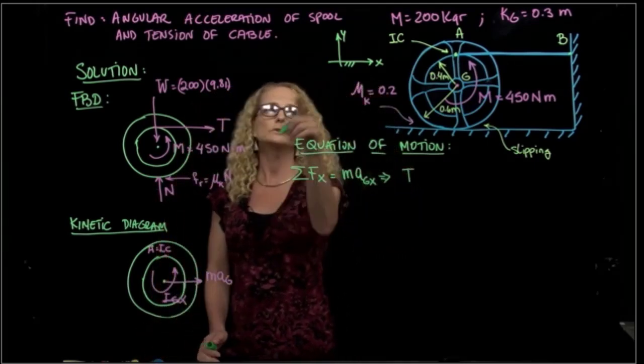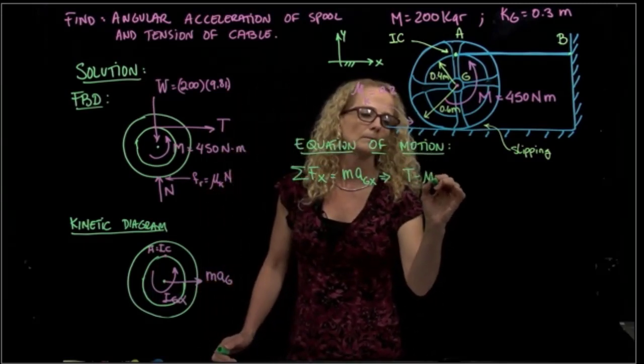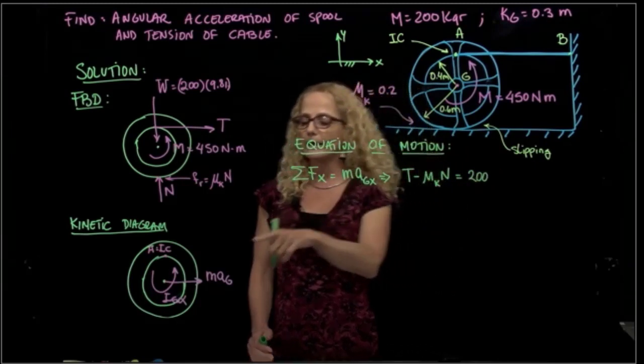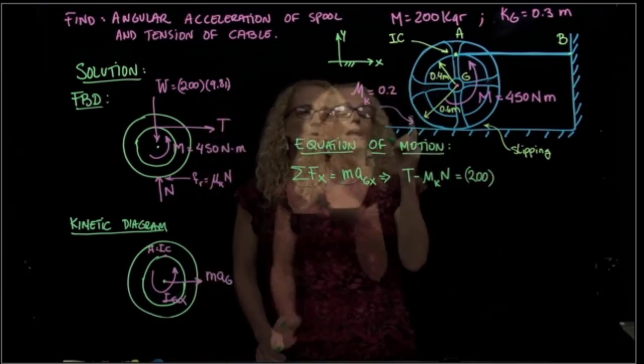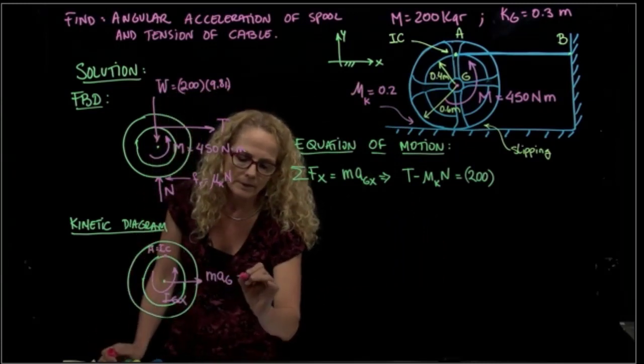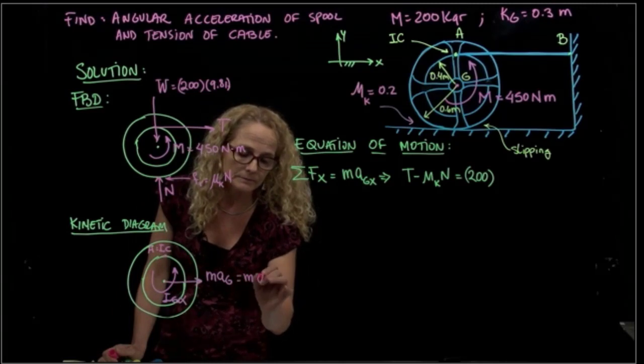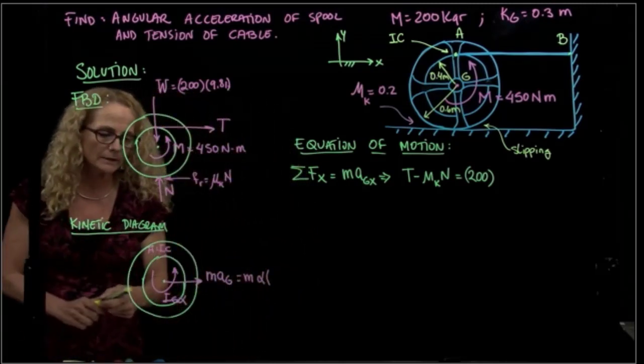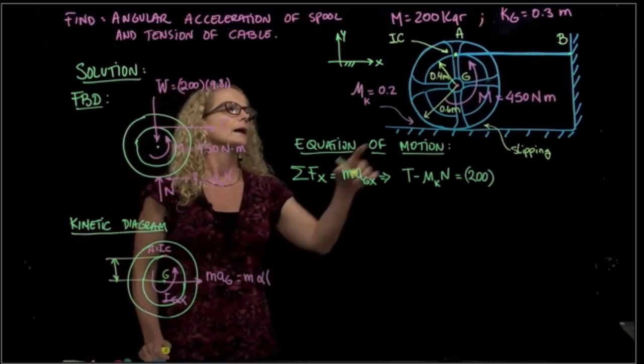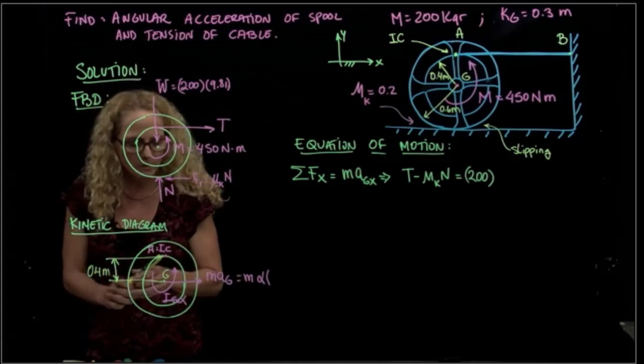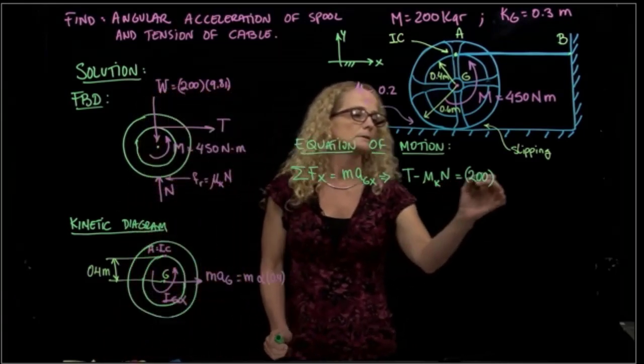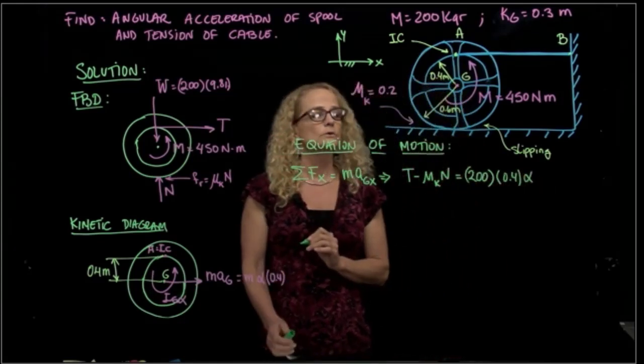As you see, I have the tension, positive. The friction, negative. And I don't have any other force. And that will be equal to my mass, that is 200 kilograms, and I have the acceleration of the center of mass. What is the acceleration of the center of mass? When I know the instantaneous center of rotation, as you recall, it will be equal to angular acceleration times the distance between the instantaneous center of rotation and the point, which is my center of gravity. And that distance is 0.4. So here I have 0.4 times alpha. That's my first equation.